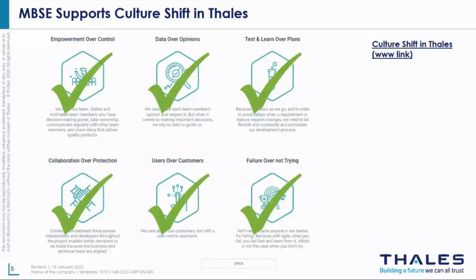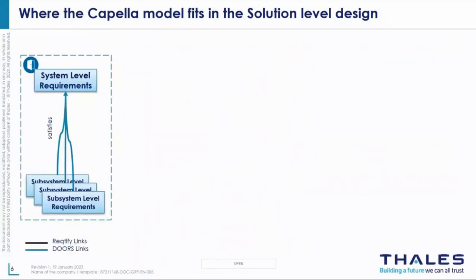Now we'll move on to Alex to explain how this has been delivered within this project. Good afternoon. Today I'm going to touch on the approach being taken in the ISR — Intelligence, Surveillance and Reconnaissance — business unit in the UK, in the use of Capella at the system level. We're purely focusing at the system level of design, not anything below subsystem at the moment, because that is where the model sits. Within ISR, the systems we do are generally very tailored towards each specific customer with very small production runs, often maybe one or two of big systems.